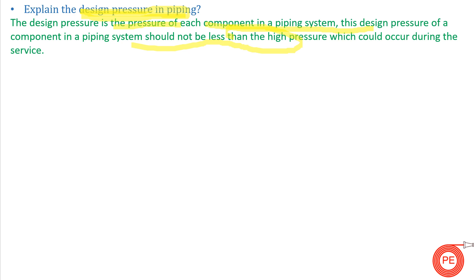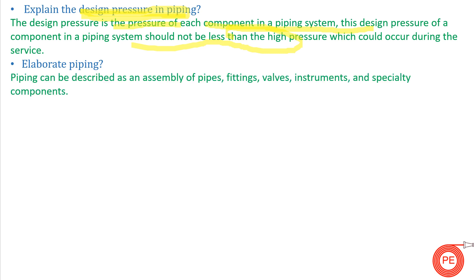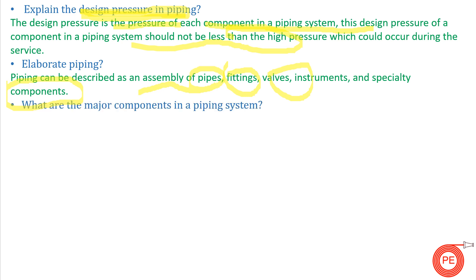Next question: elaborate on piping. Piping can be described as an assembly of pipes, fittings, valves, instruments, and specialty components. All items used in the piping system to complete the conveying of fluid fall under piping.